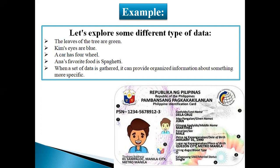You can make that kind of data about your friends — for example, Lena's favorite food, or different types of data you can collect. When a set of data is together, it can provide organized information. Organized information means arranged information about something, presented more specifically and more clearly. For example, a school registration card: when you register yourself at school, the school asks for your data — your full name, age, home address, and mobile number. This is all your personal data, which you provide when you enter the school.